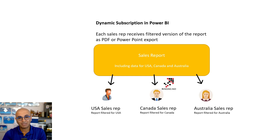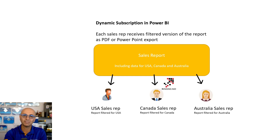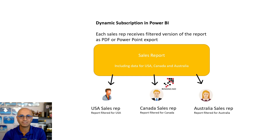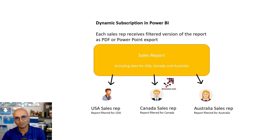You can already do that with normal subscription in Power BI — we've had that for many years. So what is dynamic subscription then? Dynamic subscription is the scenario where you want to send that report filtered, so each recipient receives a different view. For example, for a sales report with different sales reps for each country — United States, Canada, Australia — the US sales rep receives a PDF exported snapshot filtered only for United States, the Canada sales rep receives one filtered only for Canada, and Australia only for Australia. That is the filtered view of the report.